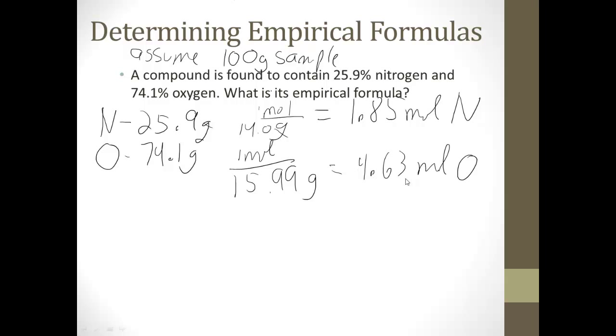So which is lower? 1.85 or 4.63? It's 1.85. So when I take 1.85 and divide it by 1.85, I get 1. So my formula is going to be N1. Next I take 4.63 divided by 1.85. 4.63 divided by 1.85 is equal to 2.5. So I have N1, oxygen 2.5. Am I done? Not yet because these are not both whole numbers. Empirical formulas will always be a whole number.